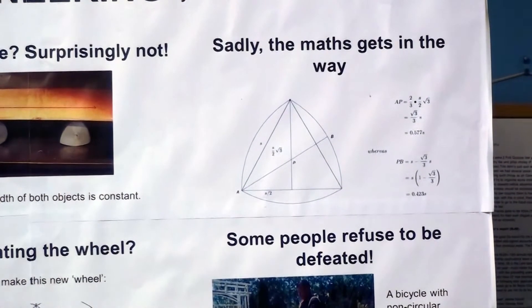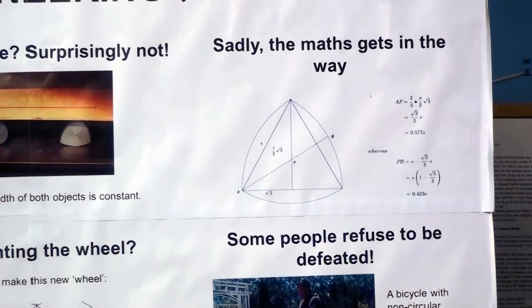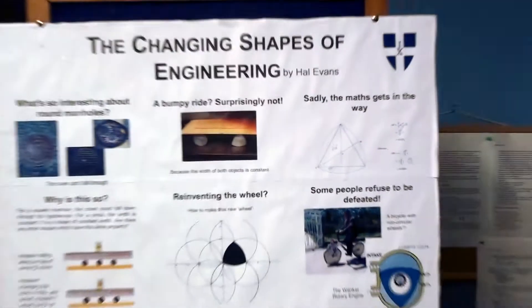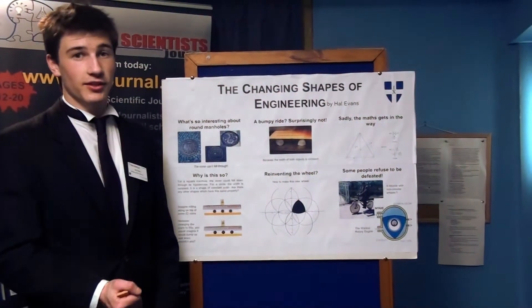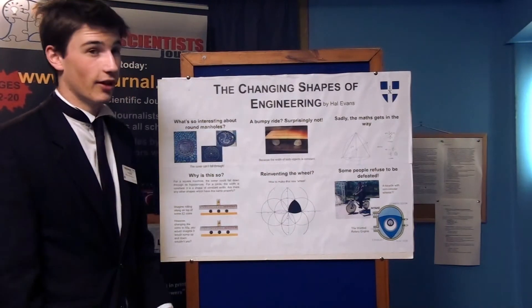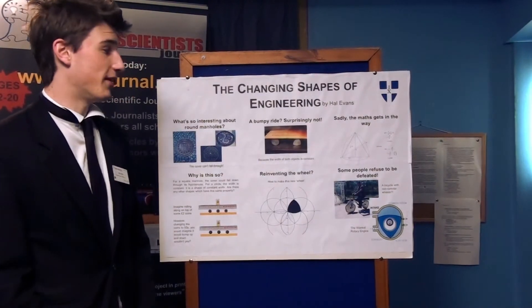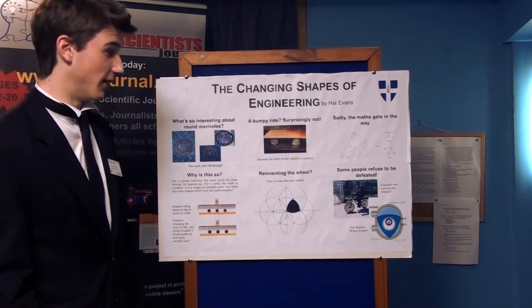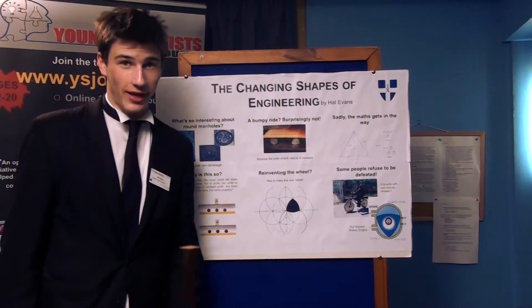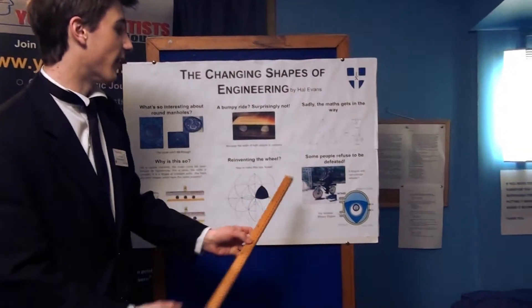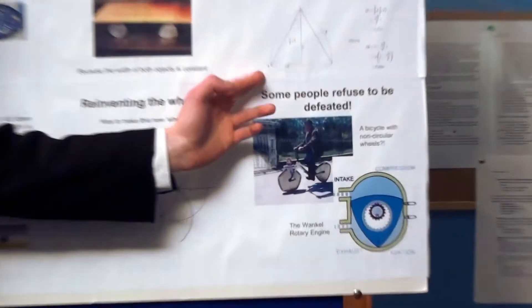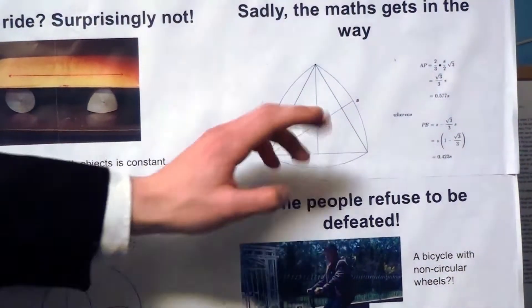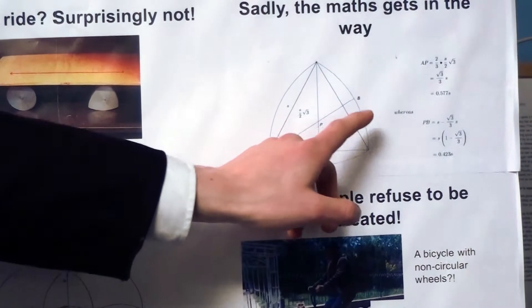So, considering this shape - what is known as a Reuleaux triangle - which has such similar properties to a circle, one might expect that you are able to make a wheel out of it. Sadly, however, this is not actually the case, because as you can see, the distance from point A to the centre P is slightly longer than the distance from P to point B.